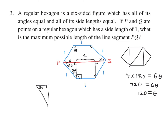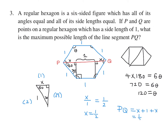So this was 60, this is the right angle, and this is 30. This is x, and this hypotenuse is 1. For a 30-60-90 triangle, the ratio of the sides is 2, 1, and root 3. So x over 1 is the same as 1 over 2, meaning x is one half. So finally, the length PQ is x plus 1 plus x, which is one half plus 1 plus one half, and that equals 2. That is the maximum possible length of any line segment PQ.